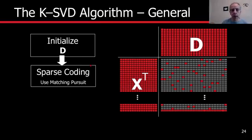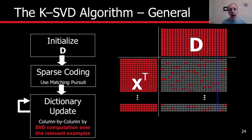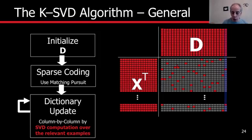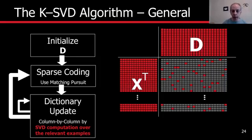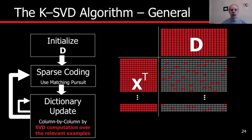The next part is we have to update the dictionary. The basic idea is we go in the other direction — for sparse coding we went signal by signal, but for the dictionary update we go one atom at a time, using the codes we have already produced. After updating, we let the signals be encoded again and we iterate. So we start with a dictionary, do sparse coding, update the dictionary, do sparse coding again, update the dictionary, until we converge or reach a preset number of iterations.